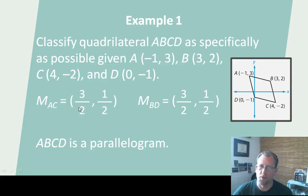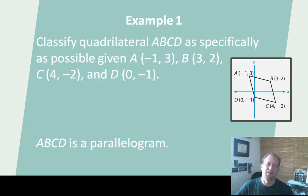It could be more, though. It could be a rectangle, a rhombus, or a square. So let's look at something a little bit more carefully. If you find the slope of AC, you would find that it is negative one. And if you find the slope of DB, this diagonal here, you will find that it is one.